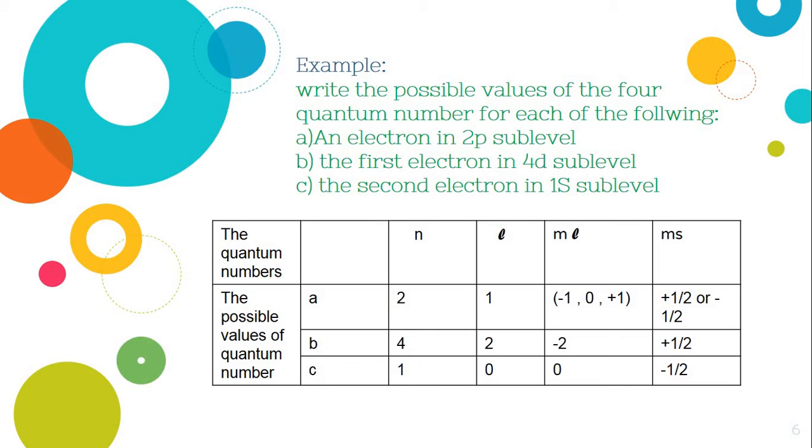Number c, the second electron in the 1s sublevel. He said the second electron. Take care of this. Second will be negative half. And its n will be, it is found in the 1s. So its n will be 1. And the ℓ will be, s is equal to 0. So the ℓ is equal to 0. And the mℓ also will be equal to 0.